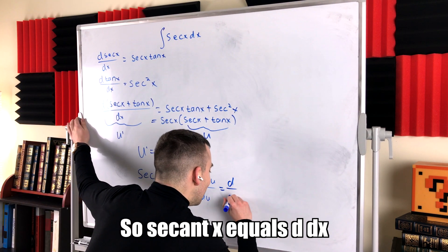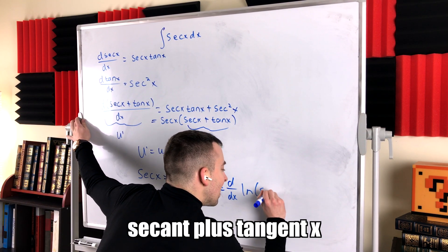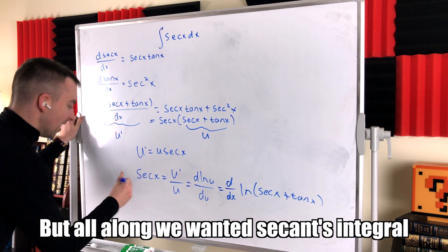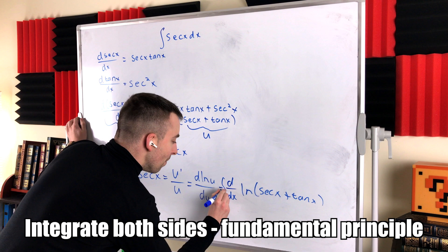So secant x equals d dx times the natural log of secant plus tangent x. But all along, we wanted secant integral. Integrate both sides, fundamental principle.